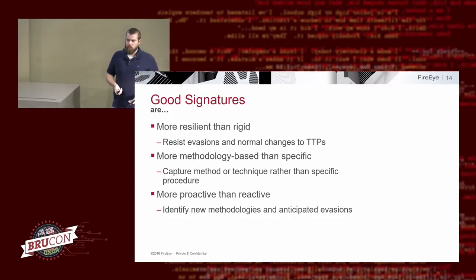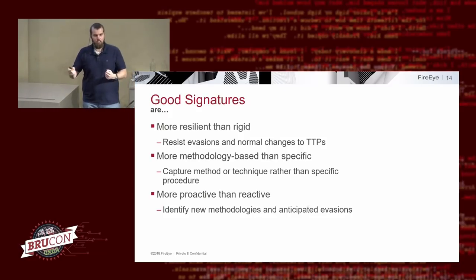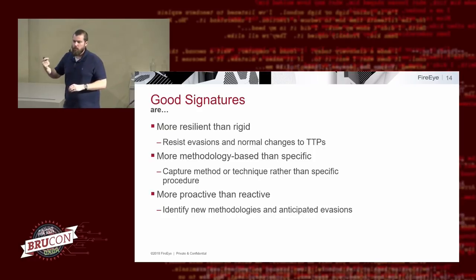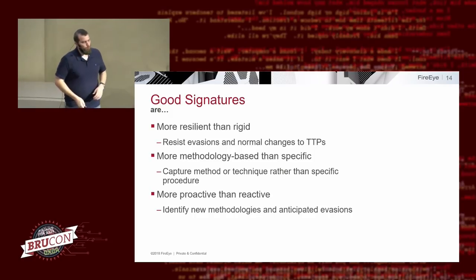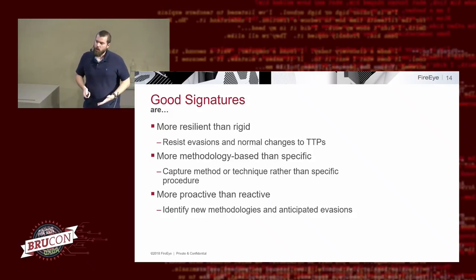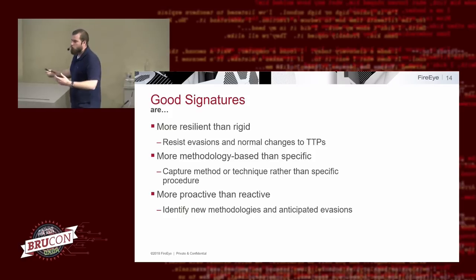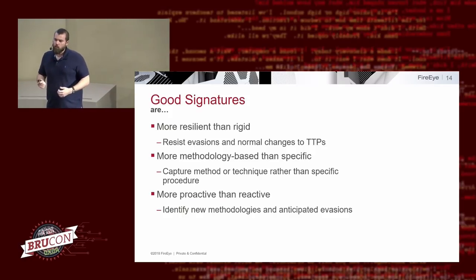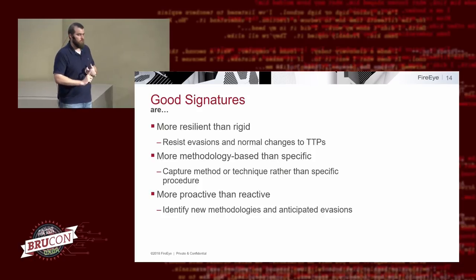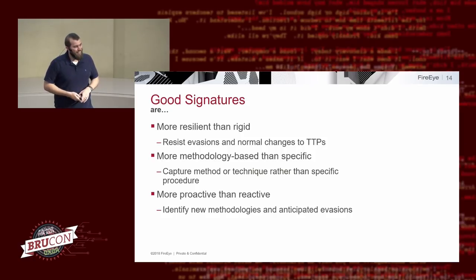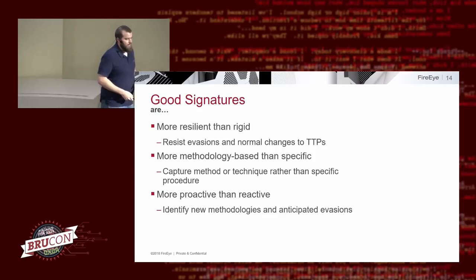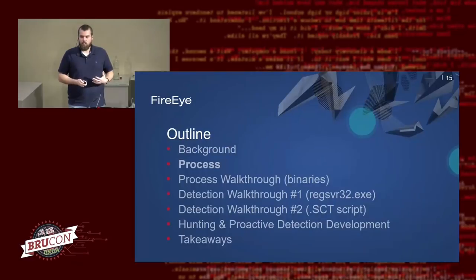We want signatures that are more methodology-based than specific. We do have very specific detections, but we also want broad overarching ones for gathering information and identifying when attackers are changing pieces — we can catch them step by step as they evade. It's also more proactive than reactive. When we see brand new malware we have to react, but we can also be proactive, staying on top of things released on Twitter and GitHub, doing internal research, and learning from venues like this so we're ahead before attackers actually use something.